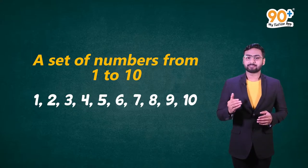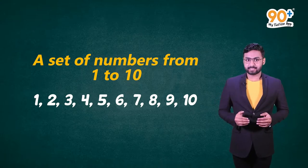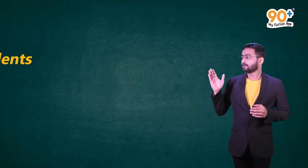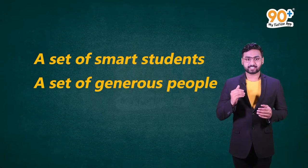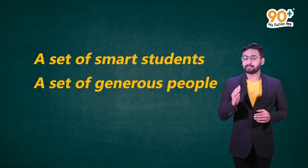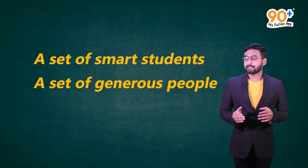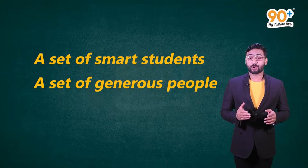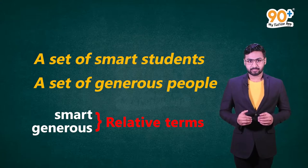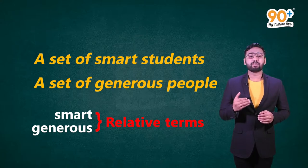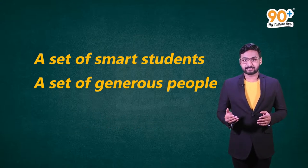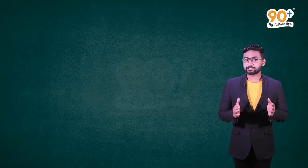Now let us consider another example: a set of smart students, or a set of generous people. Can this be considered a set? Well, not exactly, because here 'smart' or 'generous' cannot be defined or measured. We can say that these are relative terms because the meaning of these words will change from individual to individual. Hence, we cannot make a set of these situations.